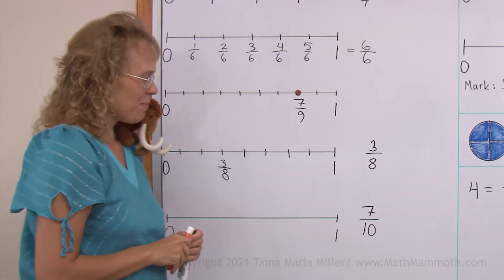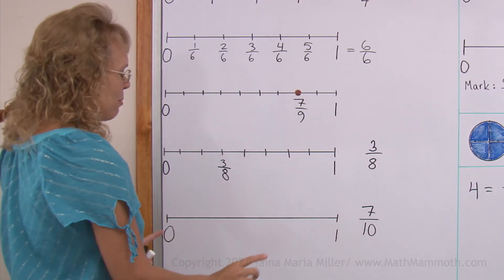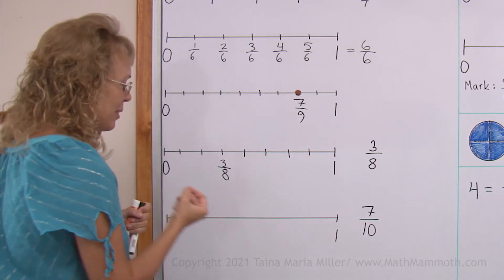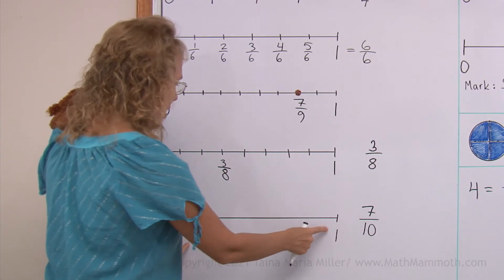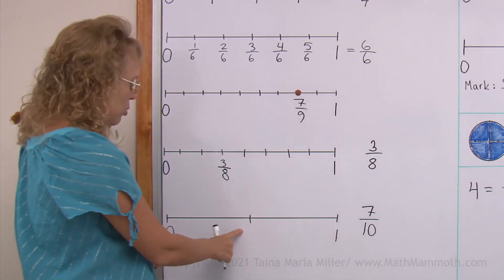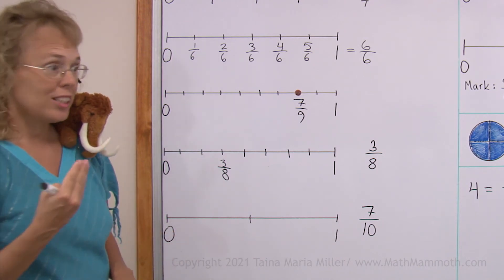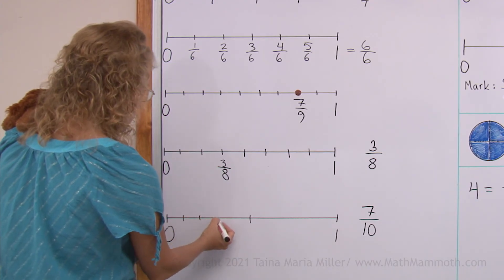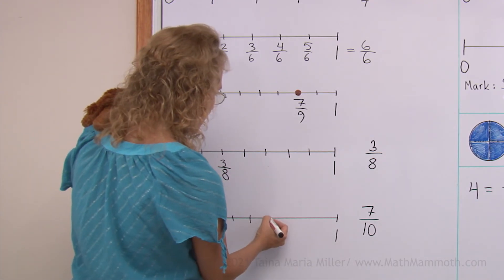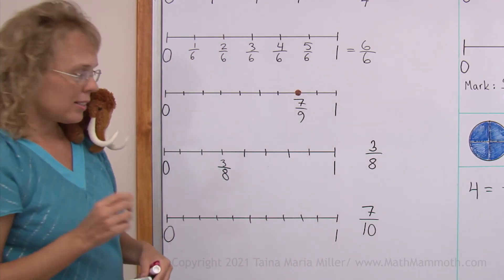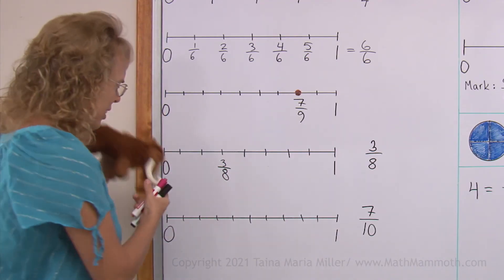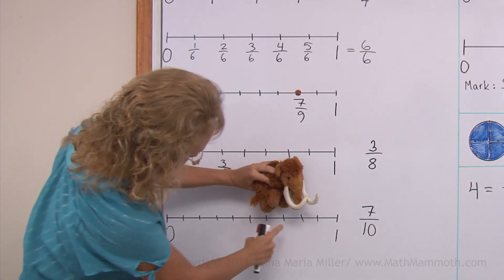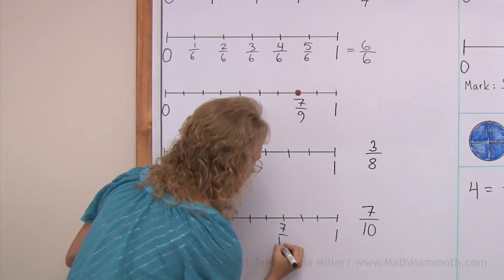Seven tenths — the same thing. Where is seven tenths on the number line? Don't just say it's here or there. We need to divide the number line into equal parts — ten parts. First of all, I can split it, and then this into five parts, which means I need four tick marks in between zero and the half point. Four tick marks. And then four tick marks here. Seven tenths — Mati, can you jump seven little jumps? One, two, three, four, five, six, seven. This one. Seven tenths.